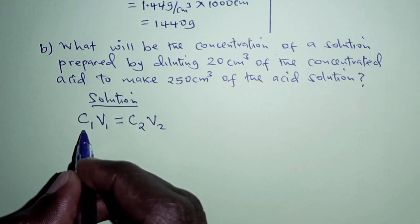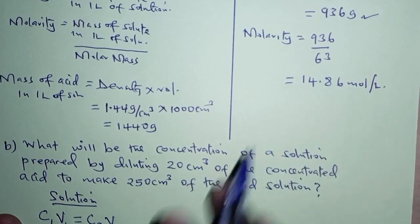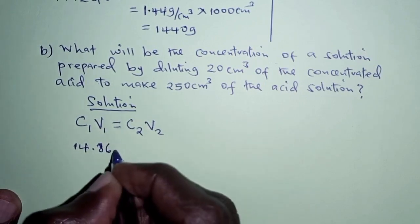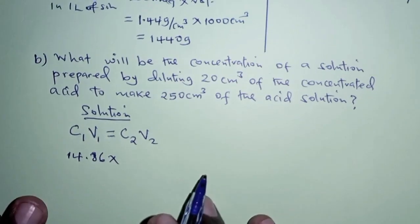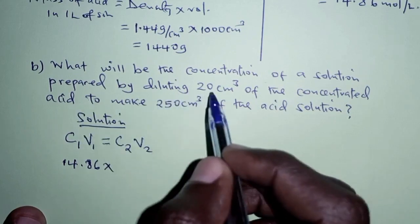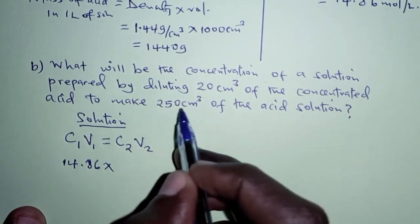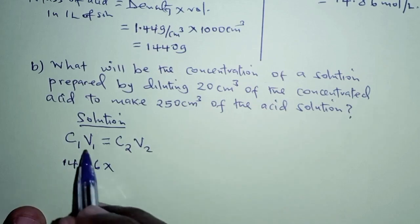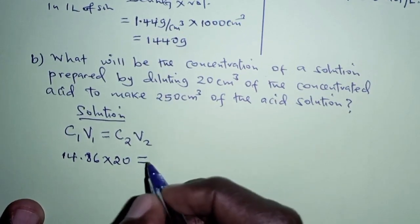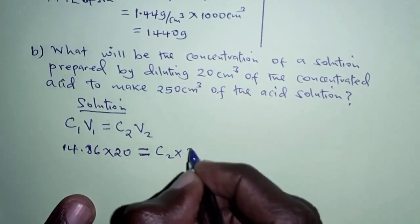The initial concentration of the concentrated acid, worked out in part A, is 14.86 moles per liter. We multiply by the initial volume of 20 cubic centimeters. Remember, 20 cubic centimeters of concentrated acid is diluted to a new volume of 250 cubic centimeters. This equals the final concentration times the final volume of 250 cubic centimeters.